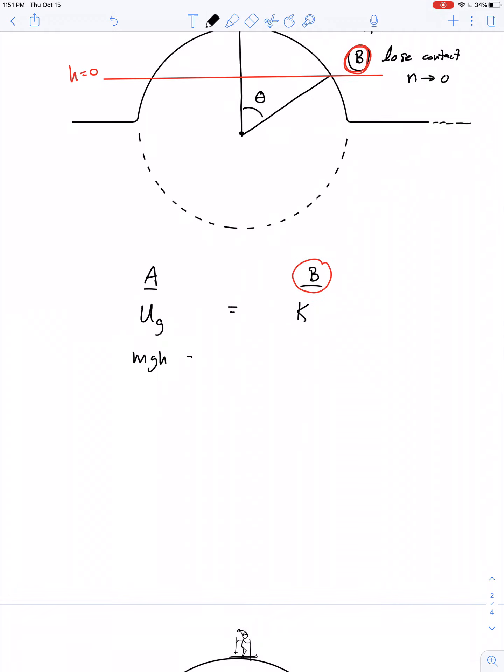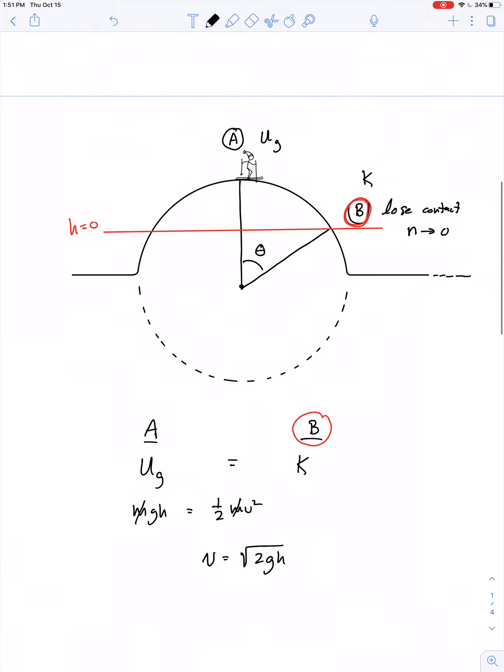So, MGH equals one-half MV squared. Oh, goodness. This is just the very familiar V equals the square root of 2GH. Okay. That's as far as we get with the law of conservation of energy. And now we know that some velocity has been developed here.